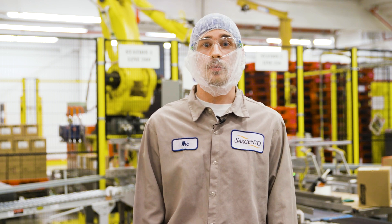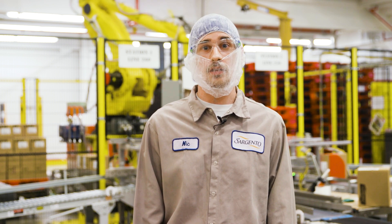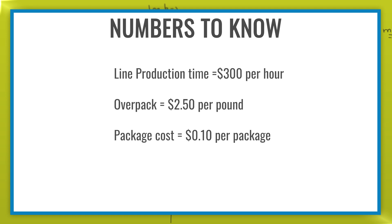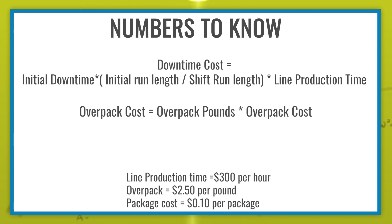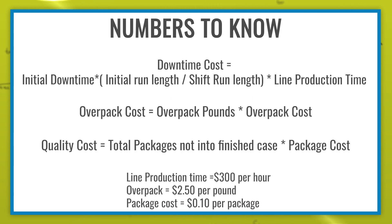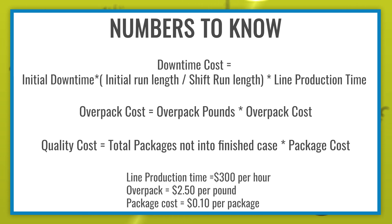Now let's bring it all together. That's a lot of numbers, but these numbers also impact money, so let's think about the cost impacts of these calculations. For this example, let's assume the following. Use your previous calculations to determine the cost impacts related to downtime for an eight-hour shift, the overpack cost for the order, and the quality cost for the order. Given those calculations for this production run, which parameter has the biggest cost impact that we would want to address?